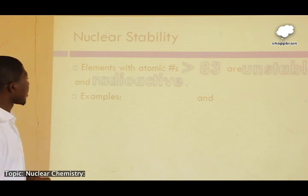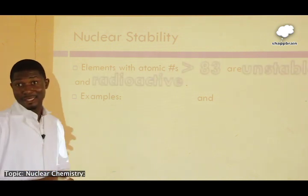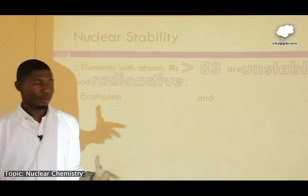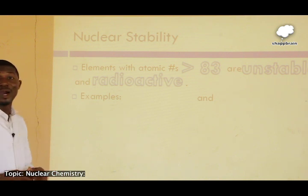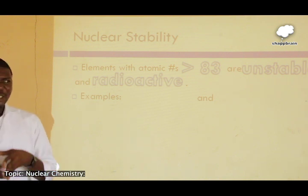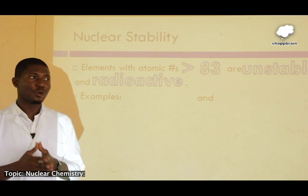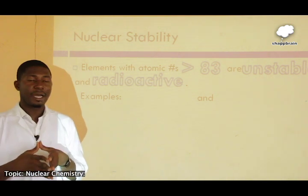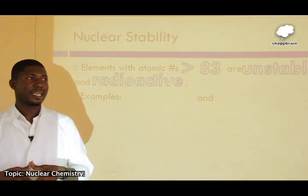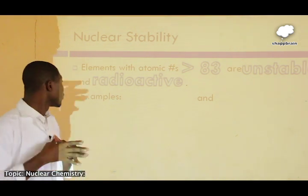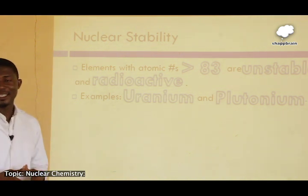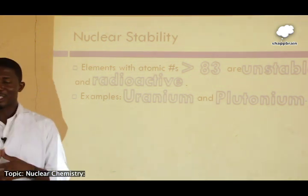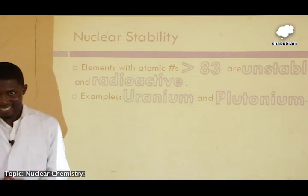Elements with atomic number greater than 83 are considered unstable and radioactive. Any element beyond atomic number 83 has unstable nuclei. Examples include uranium and plutonium, which are radioactive elements. For them to become stable, they must undergo radioactive decay.